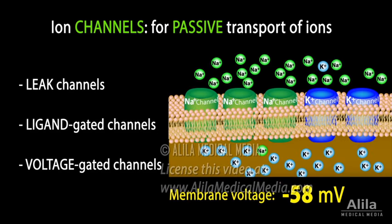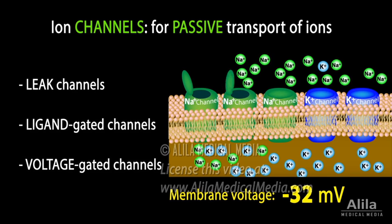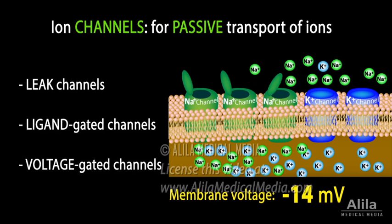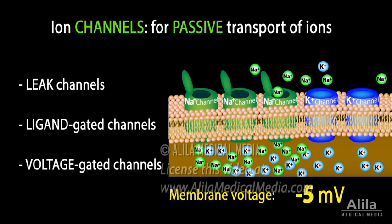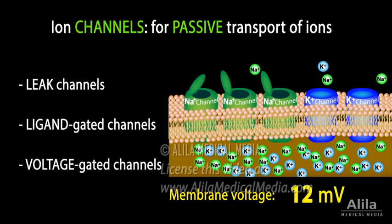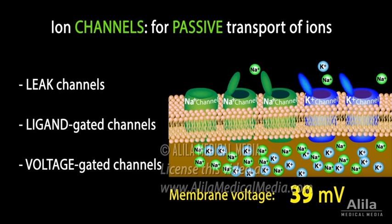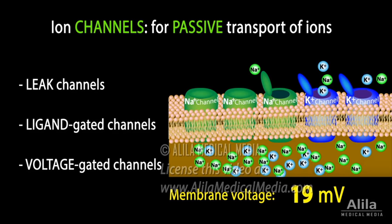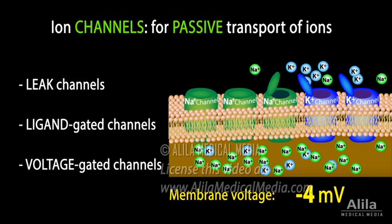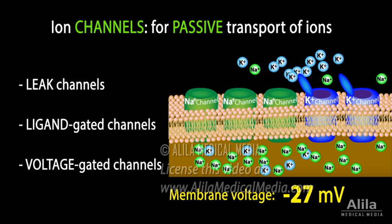Voltage-gated ion channels are regulated by membrane voltage. They open at some values of the membrane potential and close at others. These are the channels that underlie action potentials in neurons and cardiac muscles.